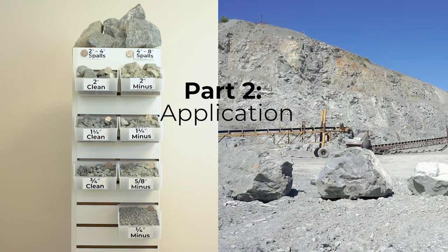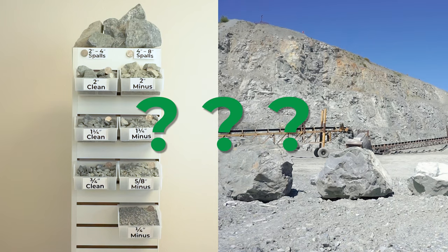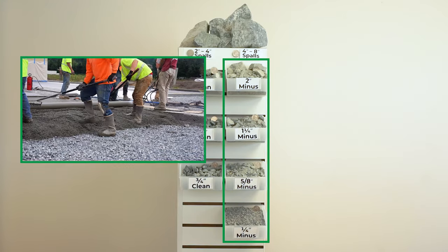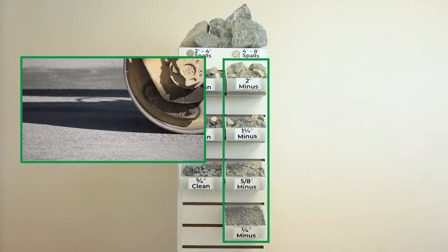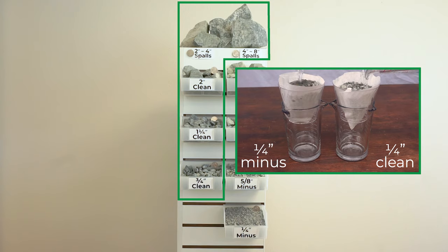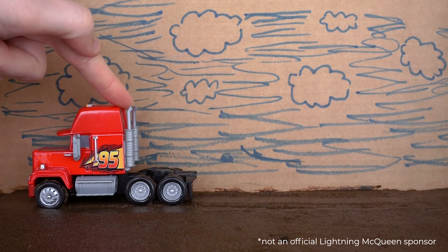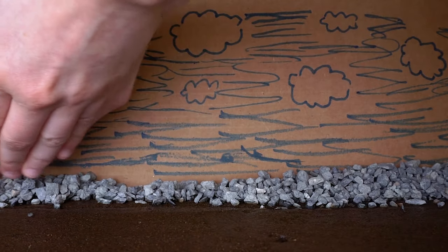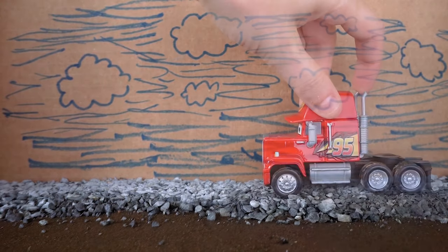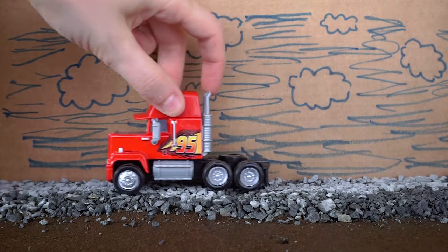Now let's talk application. How do you know which size and type to use? In general, minus rock products make good bases for concrete pavements or roads. On the other hand, clean rock products are good for projects that require filtration or drainage because they're better at allowing water to pass through. Minus and clean products can be used together too. Place clean rock in a muddy area with minus product on top and you have a sturdy foundation with a stable driving surface.